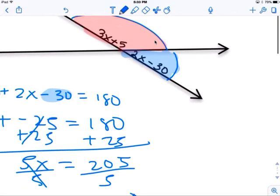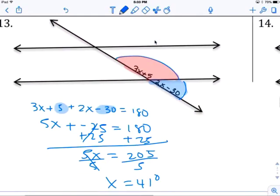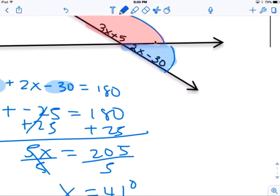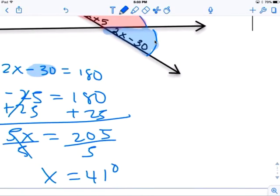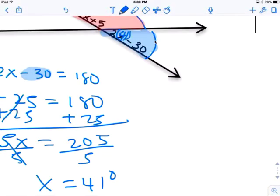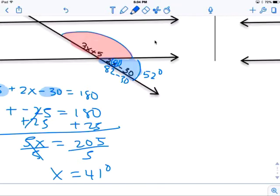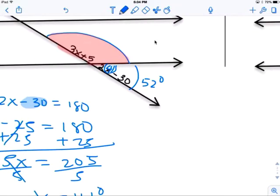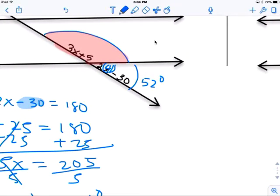So put 41 degrees into either the pink or the blue that I highlighted. I'll do the blue, this tends to be a little bit easier. 2 times 41, we put 41 here. We get 82 minus 30, we get 52 degrees, right? 52 degrees. Okay, the other one has to be 128 degrees, because add to 52, you get 180.